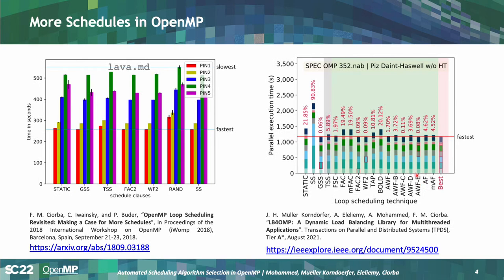On the right we also see 15 additional scheduling algorithms implemented in an OpenMP runtime and used for the SPEC OpenMP NAP benchmark. These are shown as stacked bars representing the execution time of each of the seven loops in the benchmark. The red rectangles highlight the best execution time for each loop. We can see that the best scheduling algorithm differs per loop, showing that different loops of the same application may need different scheduling algorithms.